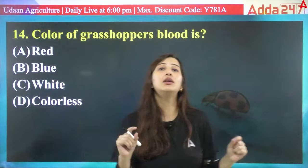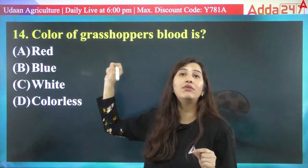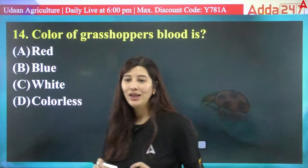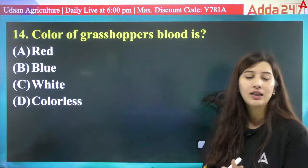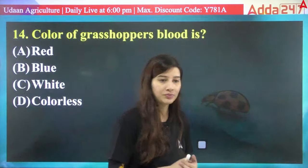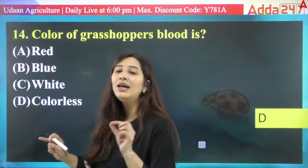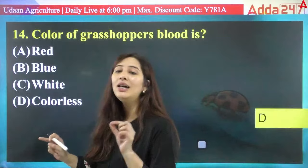What is the color of grasshopper's blood? Options: red, blue, white, or colorless. The answer is D — colorless. The blood of insects is called hemolymph, and in grasshoppers it is colorless.